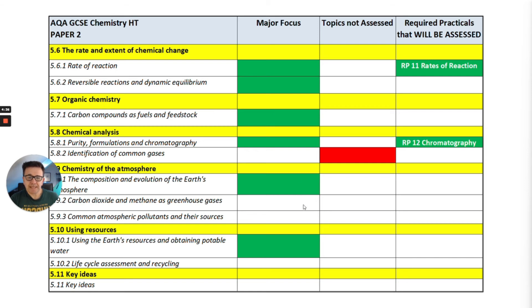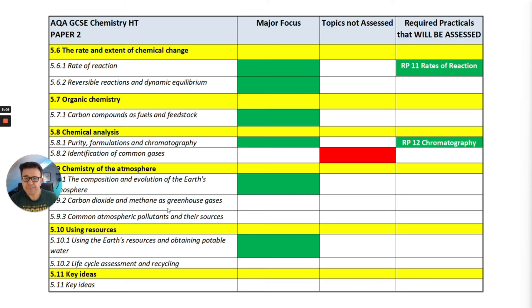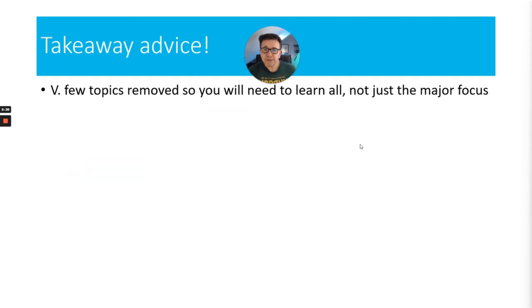For Paper 2, there's a real concentration of major focus on the rate and extent of chemical change — rates of reaction, reversible reactions, and dynamic equilibrium — plus the required practical. Organic chemistry is very important in this exam. For chemical analysis, the only topic not assessed is the identification of common gases, but you do need to know about chromatography. Chemistry of the atmosphere — particularly the evolution of Earth's atmosphere — and using resources, including potable water, are also covered. So for higher tier combined science chemistry, you need to know most of it.